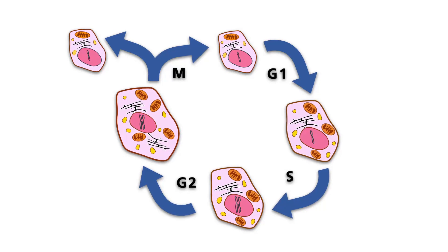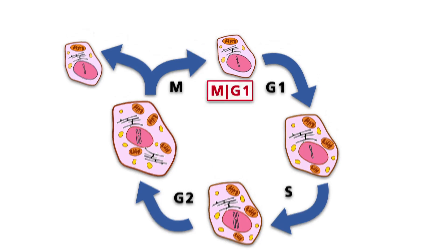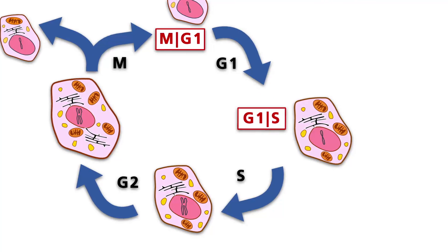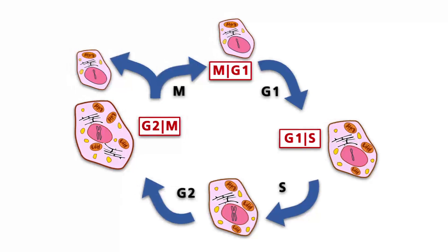There are three major checkpoints. The MG1 checkpoint between the replication and the G1 phase, the G1S checkpoint, and the G2M checkpoint.